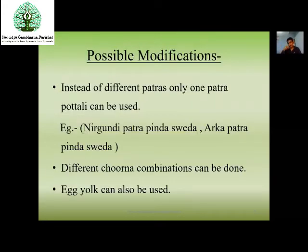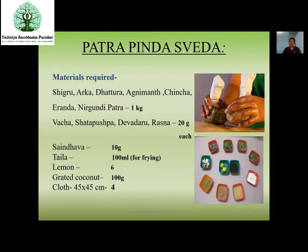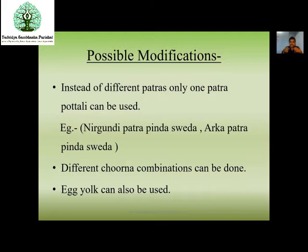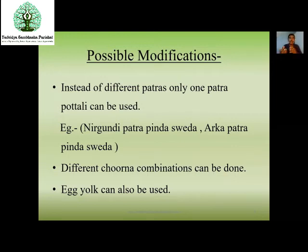For possible modifications: leaves like Shigru, Arka, Datura, Agnimantha, Chincha, Erenda, Nirgundi Patra — everyone may have a doubt: what if we don't have all these Patras? Just remember, whichever Patras are available, you can take those only. For example, if Nirgundi is abundantly available, collect Nirgundi, make it as a Potali, and use it for Pinda Sveda purpose. Whichever Patras are available in your surroundings, depending on that you can make a Patra Pinda Sveda.